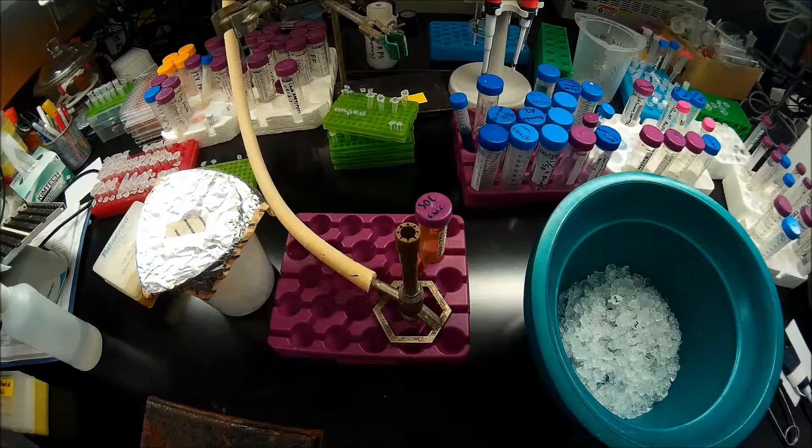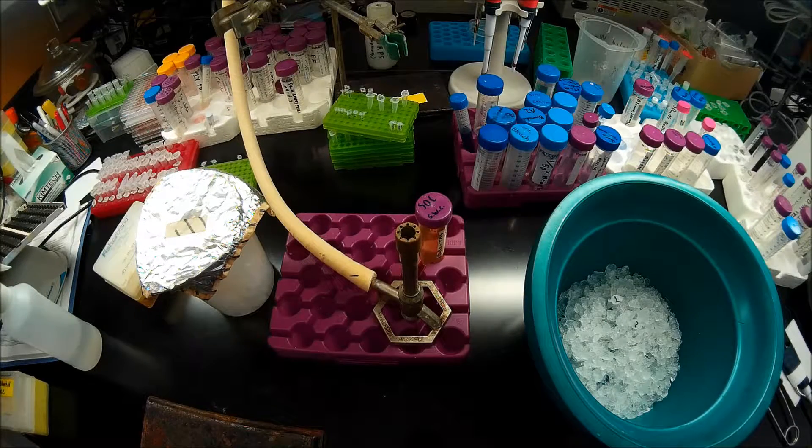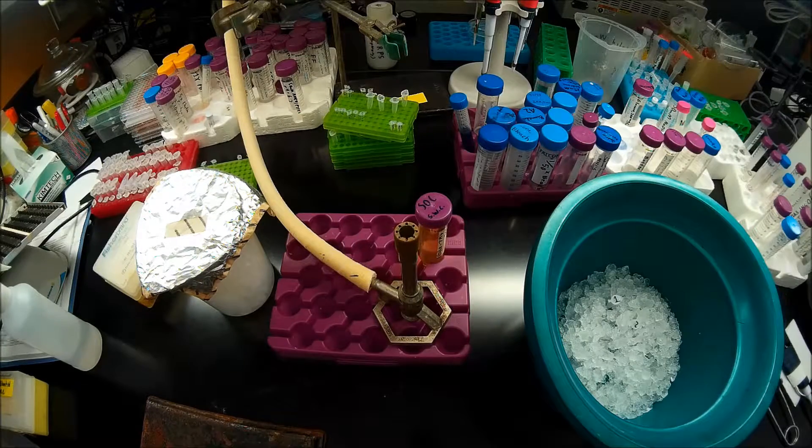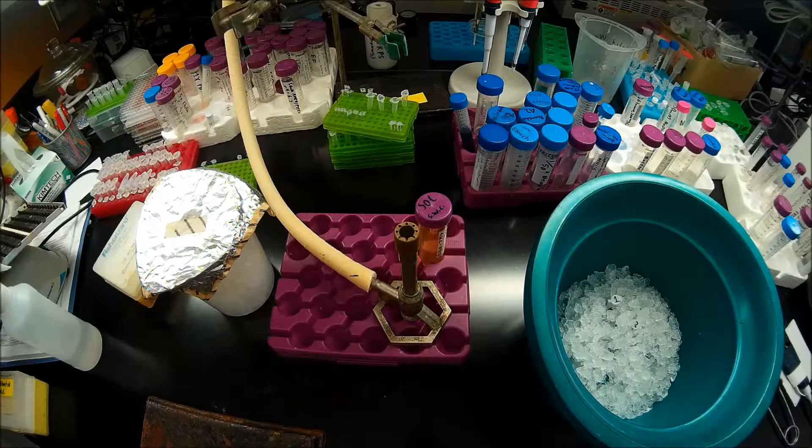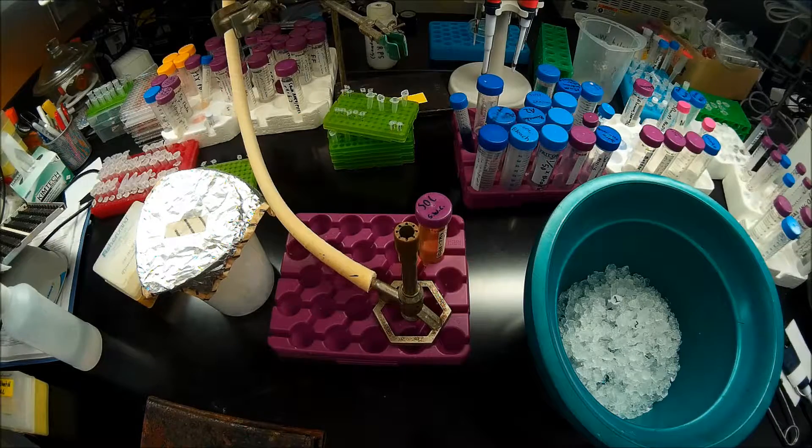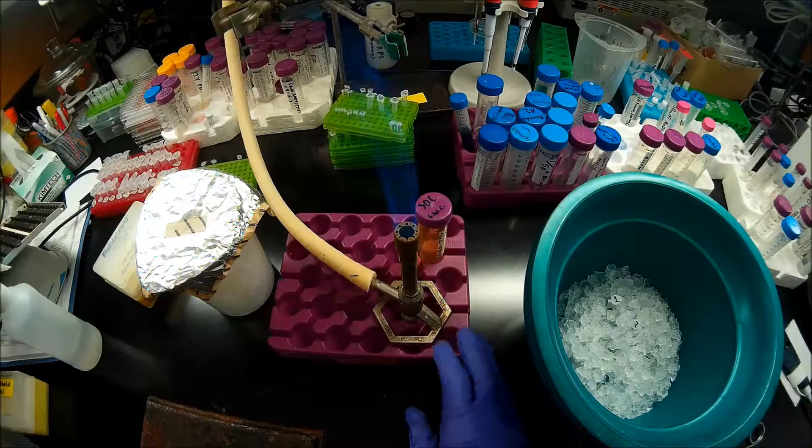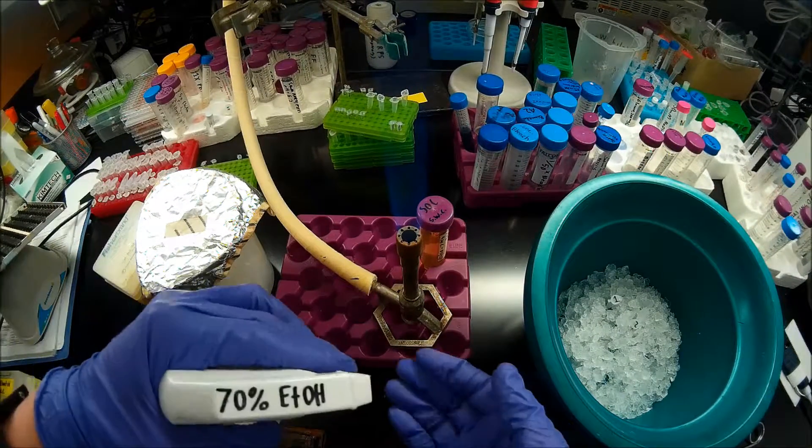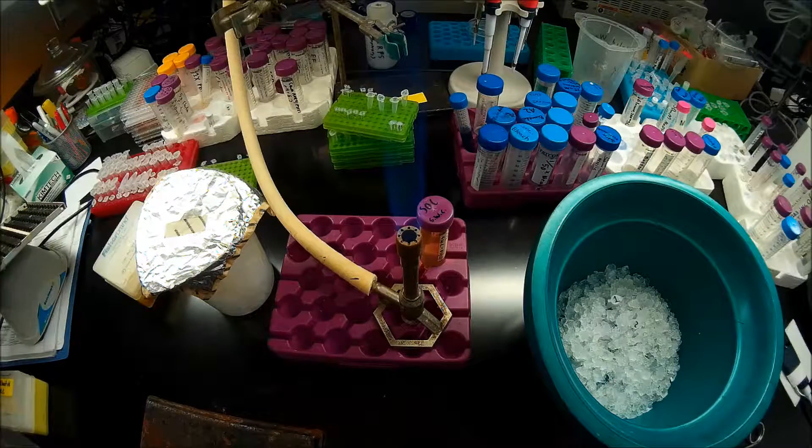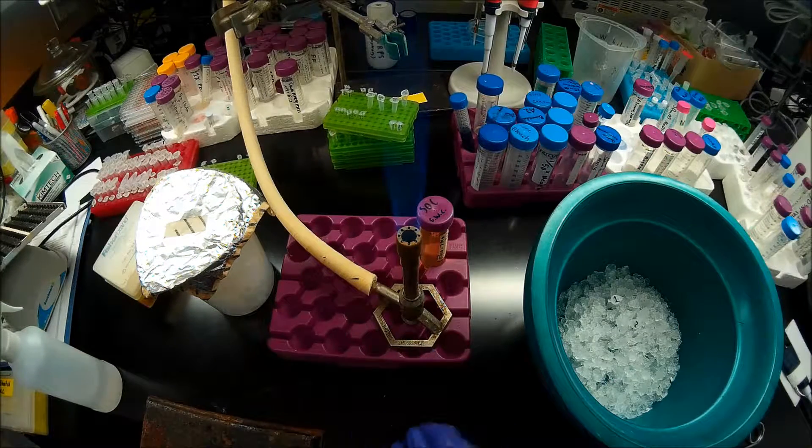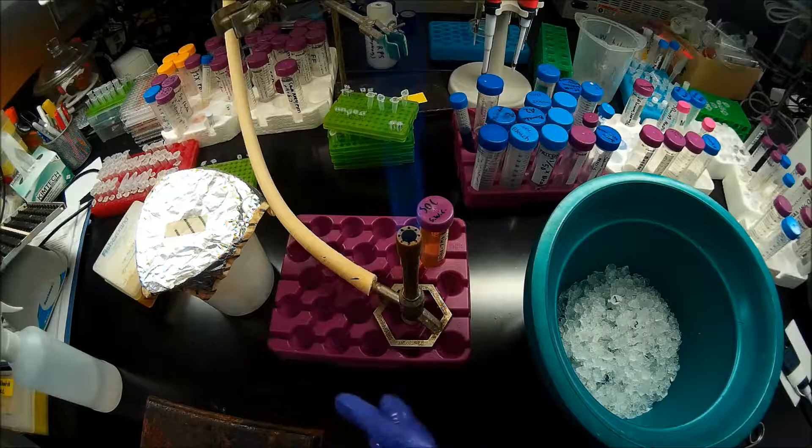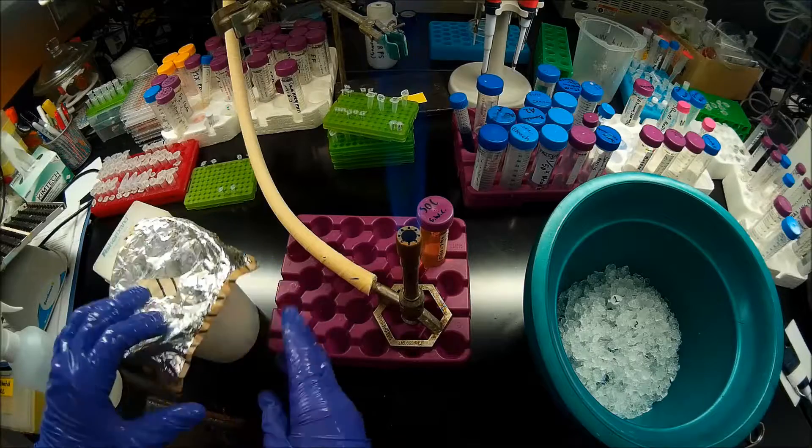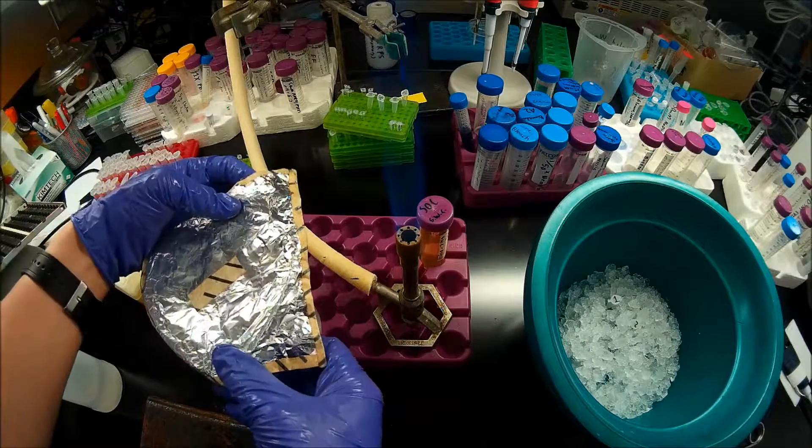But again, that would not be necessary if I was transforming with amp-resistant whole plasmid. So I'm going to turn my Bunsen burner back on. So I'm going to take 70% ethanol and dry wash my hands with that before I reach into this autoclaved beaker here of 2 mil tubes.